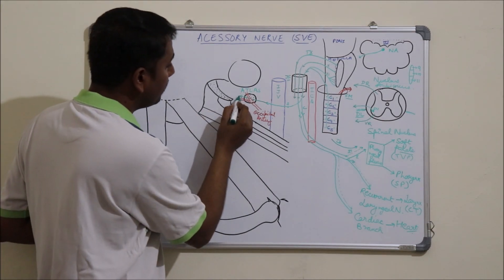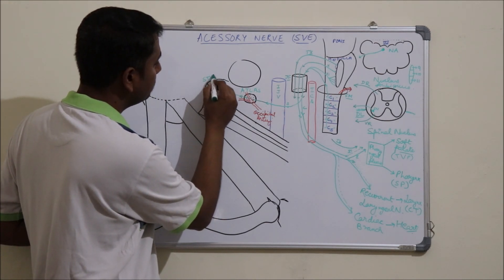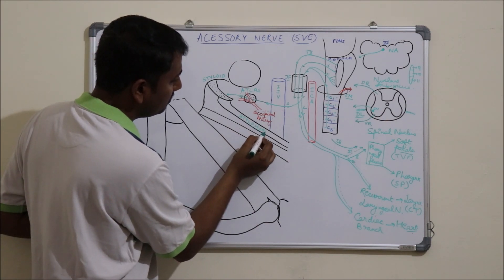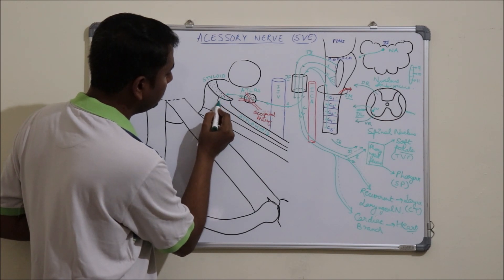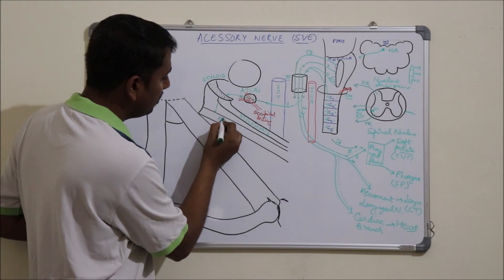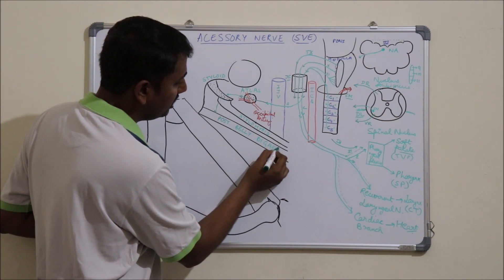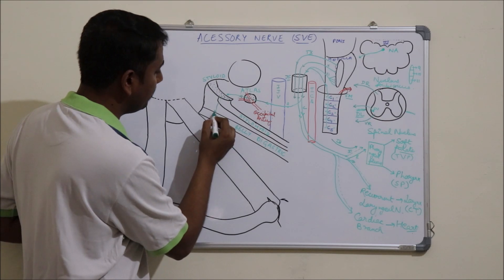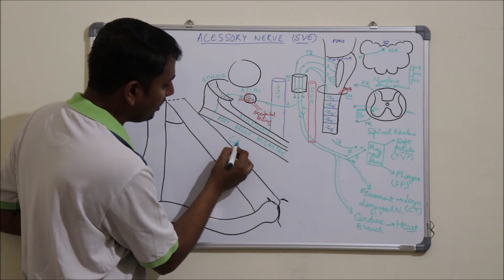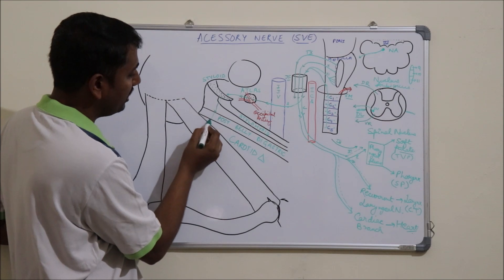The spinal part then passes backwards and laterally, deep to the styloid process and the styloid muscle. It then passes downwards deep to the posterior belly of the digastric, and appears at the upper angle of the carotid triangle.